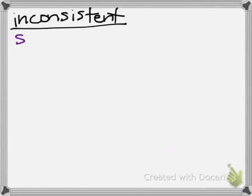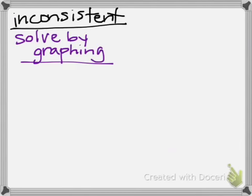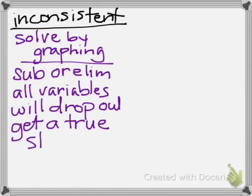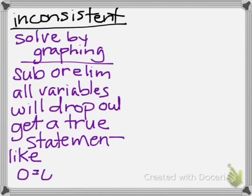The third possibility is if it's inconsistent. You can always solve it by graphing. Inconsistent is going to be parallel lines. When you do substitution or elimination, the variables are going to drop out.